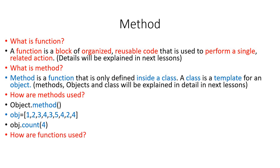How are functions used? They are not used with dot notation. First you type the name of the function and then in parentheses you can type any object you have created. For example, len is a function — you use it like len and then in parentheses type the object name, such as obj.